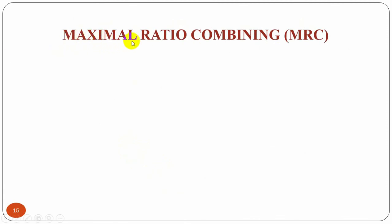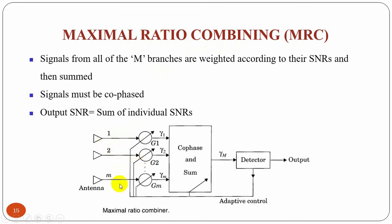The next type of receiver diversity is maximal ratio combining. Here, the signals from all M branches are weighted according to their individual signal-voltage-to-noise-power ratios and then summed. The individual signals must be co-phased before being summed, which generally requires an individual receiver and phasing circuit for each antenna element. Maximal ratio combining produces an output equal to the sum of the individual SNRs, and can produce an output with acceptable SNR even when none of the individual signals are themselves acceptable.